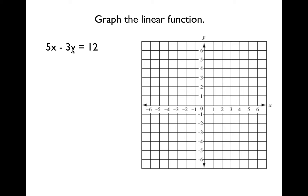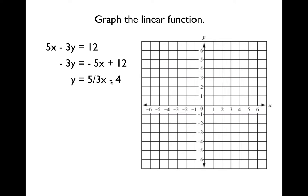So what's happening to y? It's being multiplied by negative 3, and then we're combining it with 5x. So to undo this equation, we're going to subtract 5x and then divide by negative 3. And when we do that, what we get is y equals 5 thirds x minus 4.